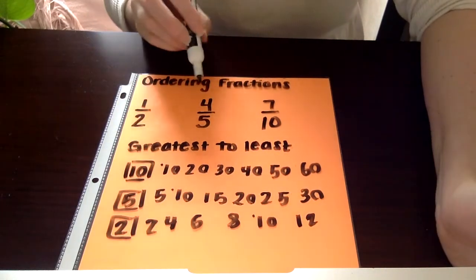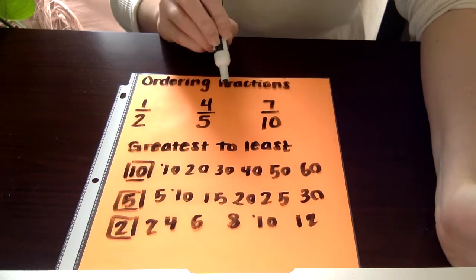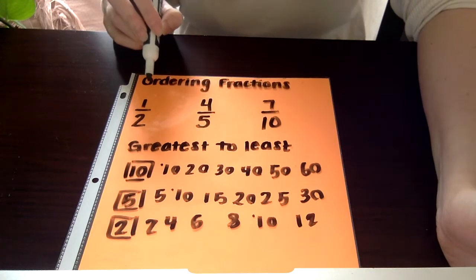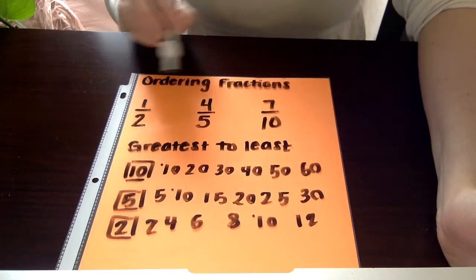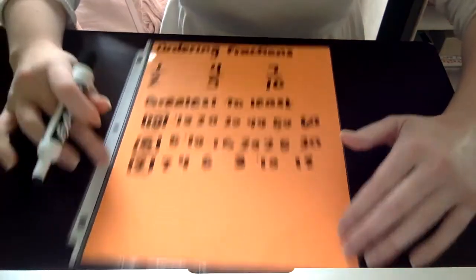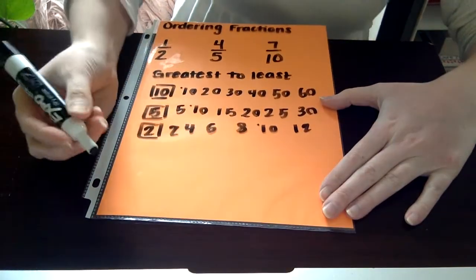So I'm going to change 4 fifths to an equivalent fraction with a denominator of 10. And I'm going to change 1 half to an equivalent fraction with a denominator of 10. I don't need to change 7 tenths. It already has a denominator of 10. So I'm going to scroll down here, and let's see if we have enough space to do it.